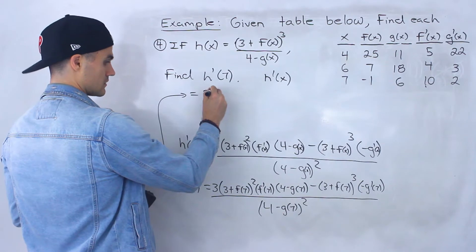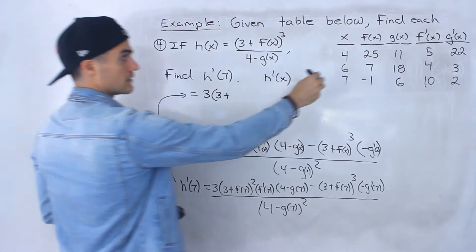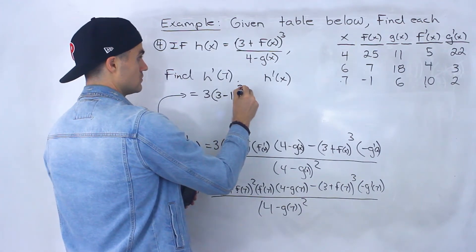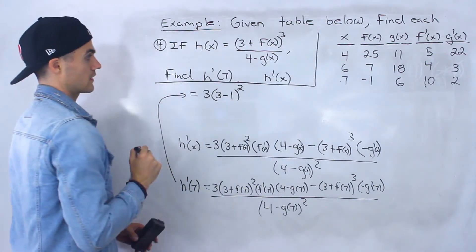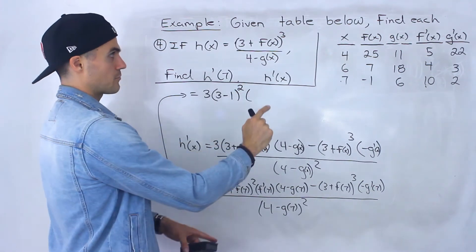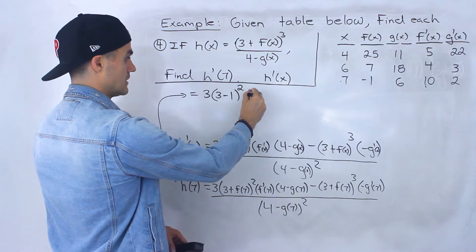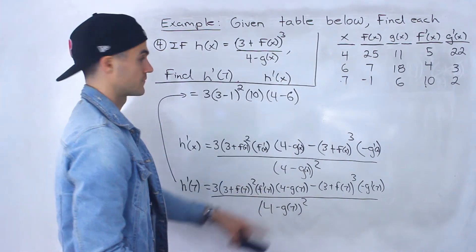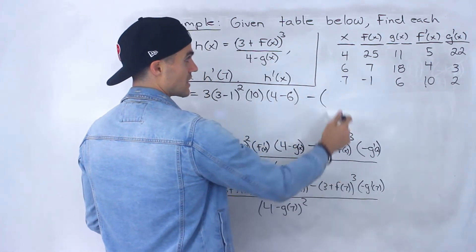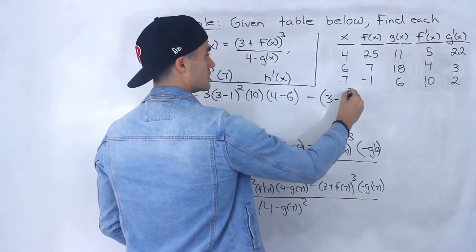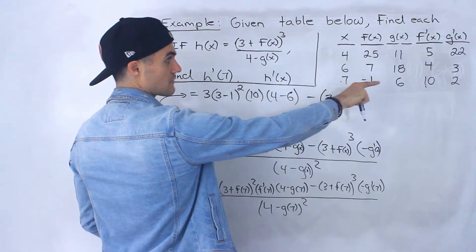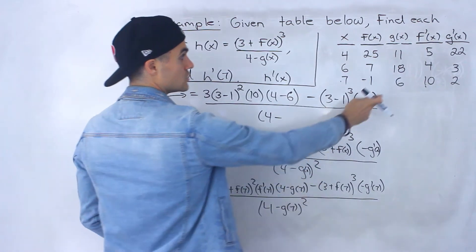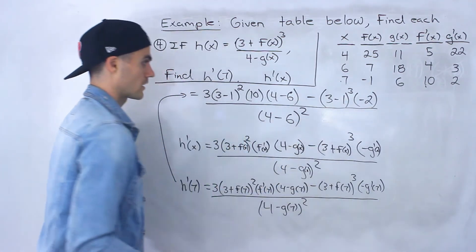From the table: f of 7 is negative 1, so 3 plus f of 7 is 3 plus negative 1, which is 3 minus 1; f prime of 7 is 10; g of 7 is 6, so 4 minus g of 7 is 4 minus 6; and g prime of 7 is 2, so negative g prime of 7 is negative 2. Substituting all of these in: we have 3 times (3 minus 1) squared times 10, times (4 minus 6), minus (3 minus 1) cubed times negative 2, all over (4 minus 6) squared.